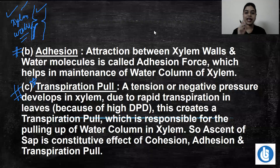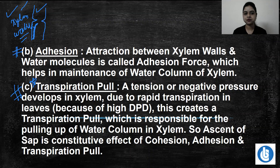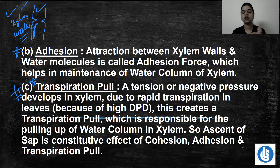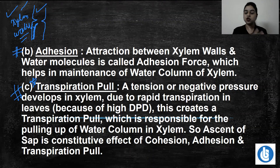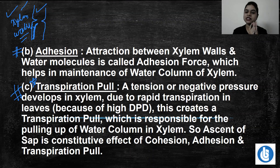So let me clarify the three components once more. Cohesion is the force between water molecules that generates a continuous water column. The column is not generated in air — it has to stick with the xylem wall using adhesion force, so the wall provides support for the column to go up. That is the adhesion force sticking the water column to the xylem wall.